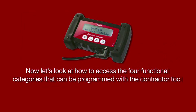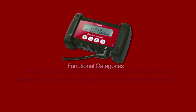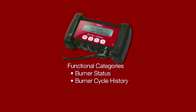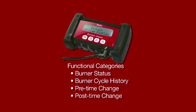Now let's look at how to access the four functional categories that can be programmed with the Contractor tool. These include burner status, burner cycle history, pre-time change, and post-time change.